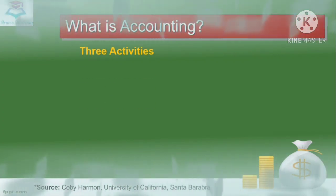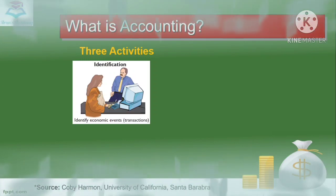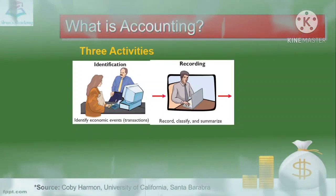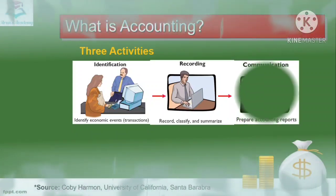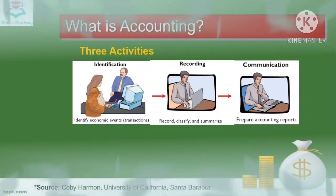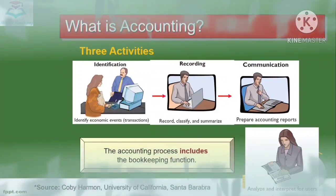Another meaning of accounting involves three activities. First is identification of economic events — we identify what transactions have been made in the business. Second is recording: the identified transactions are recorded, classified, and summarized. Third is communicating: the prepared accounts and reports are communicated to the stakeholders. Finally, the data is analyzed and interpreted for the users, who are the stakeholders. The accounting process also includes bookkeeping functions.